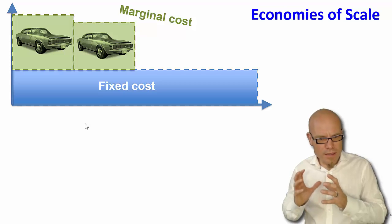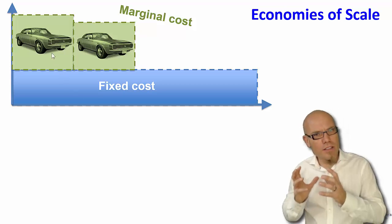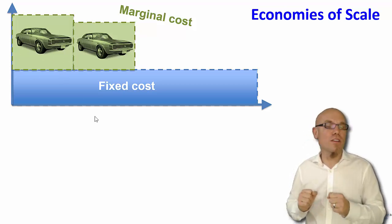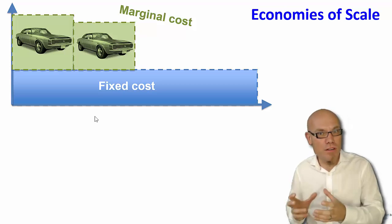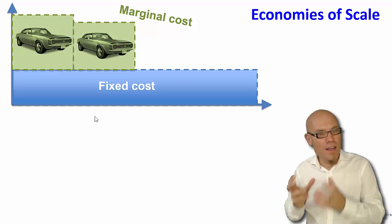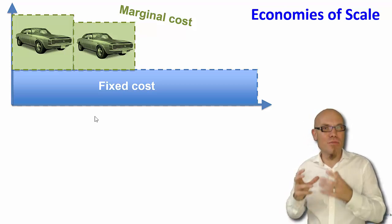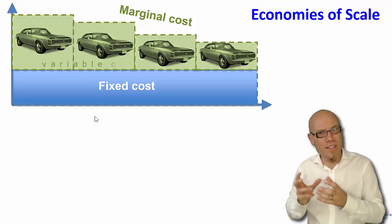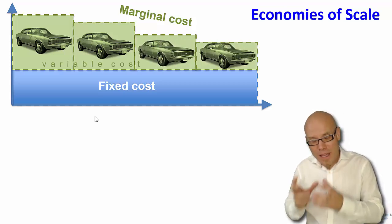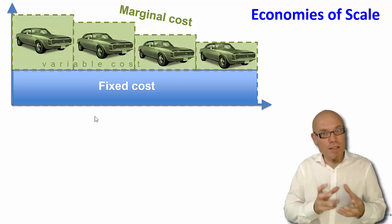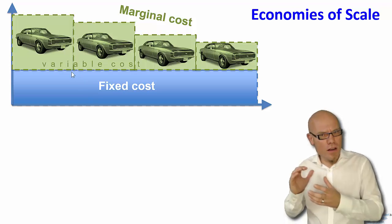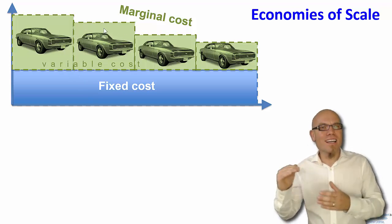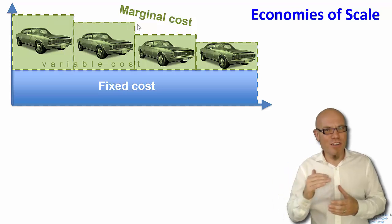So you need to pay your workers — there are labor costs. Then you need to buy new rubber for the tires, and so forth. So these are marginal costs that you have to expend every time you build a new car. These costs might go down over time, and that is called economies of scale.